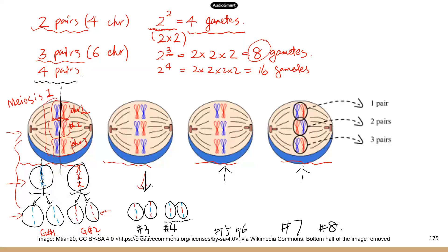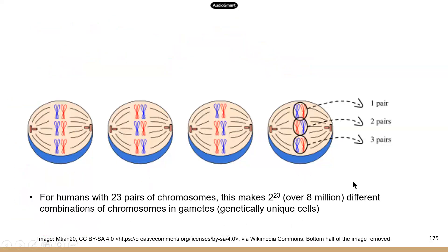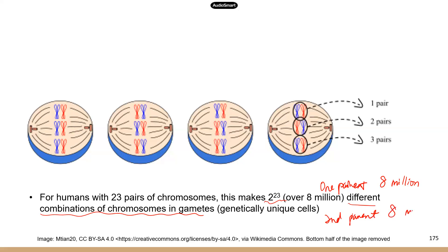We only went up to four pairs of chromosomes, but humans have 23 pairs. With 23 pairs, the calculation gives two to the 23rd, which is over 8 million different combinations of chromosomes in gametes. From each parent you have a possibility of over 8 million different gametes. And this is from just one parent — so one parent gives roughly 8 million possibilities, the second parent also gives 8 million, and when two gametes combine, the final number of possibilities is 8 million times 8 million, which is a very large number.